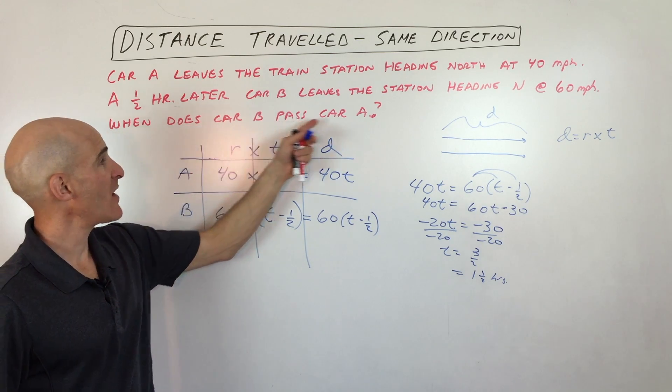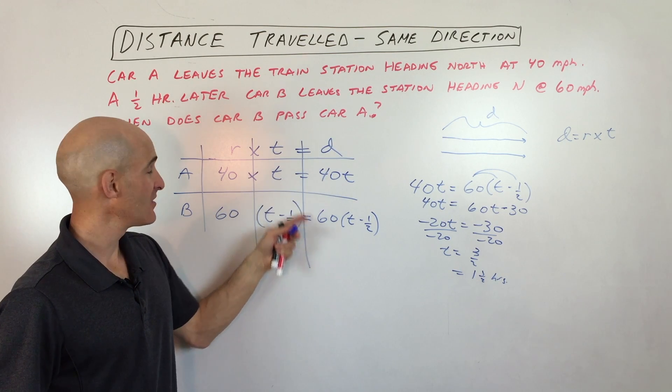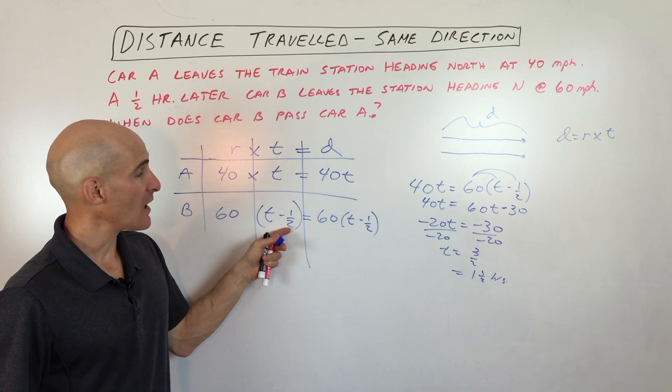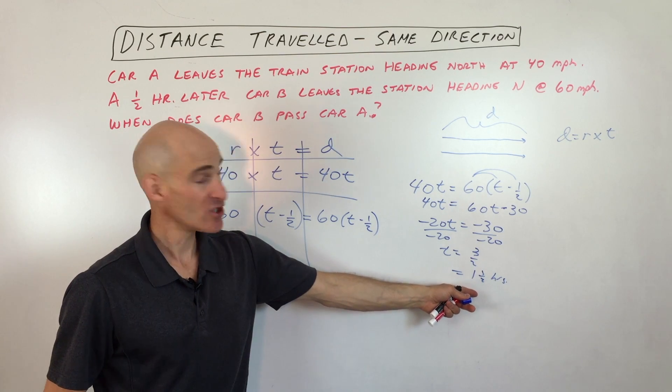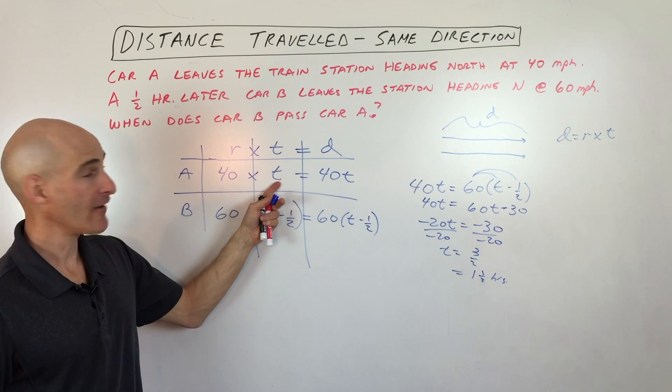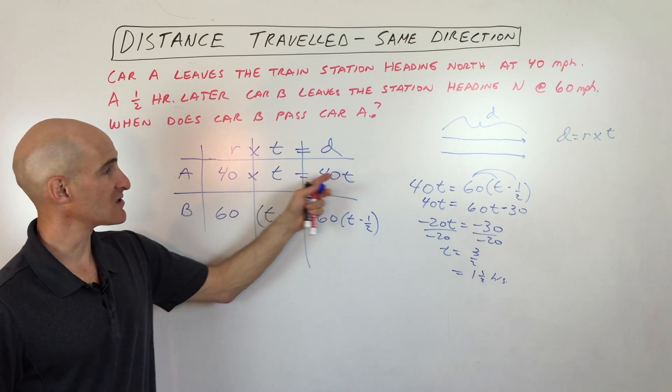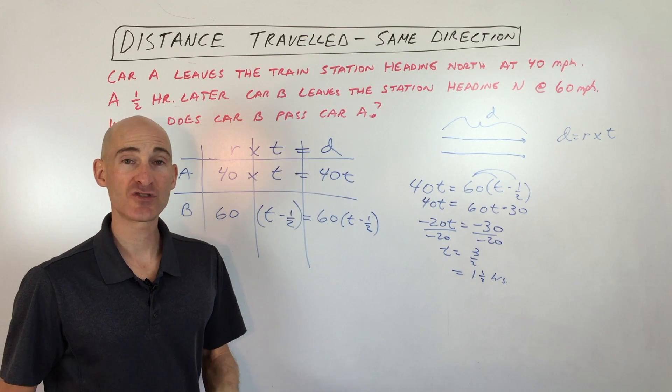So it says, when does car B pass car A? Well, it would be an hour and a half after car A started, but only an hour after car B started. Now, if you wanted to find the distance, you could then put back in one and a half. And you can see that's going to be one and a half times 40 is 60. So they will both have traveled 60 miles.